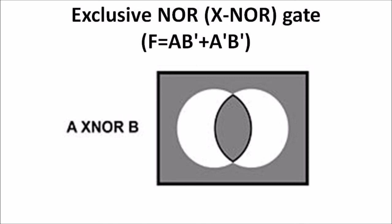Finally, we discuss the Exclusive NOR gate, or XNOR gate. The XNOR gate contains two or more inputs and produces only one output. It is the complement of the XOR gate, as indicated by a small circle in the graphical symbol. This gate produces output one when all inputs are either all zero or all one, otherwise its output is zero. The XNOR gate is simply an XOR gate followed by a NOT gate.